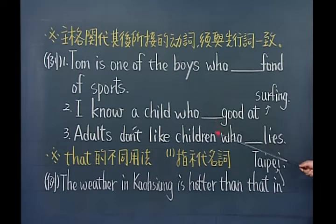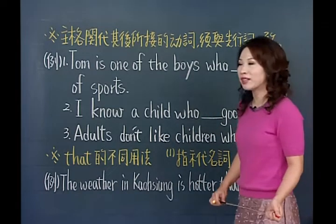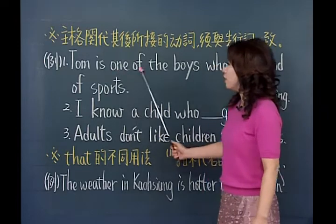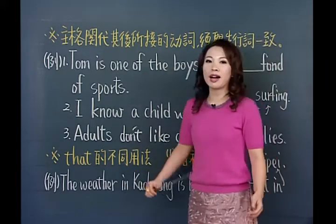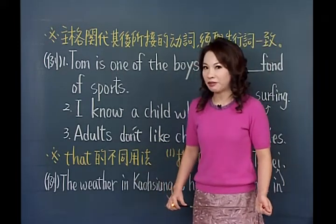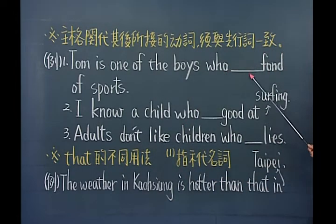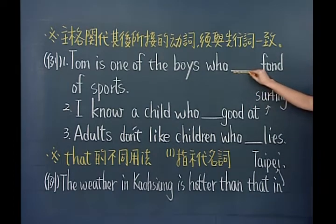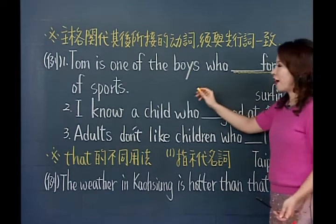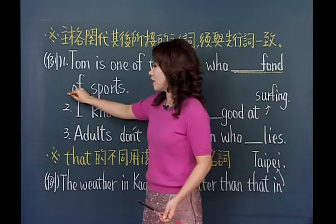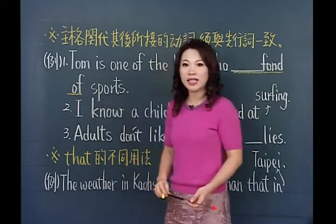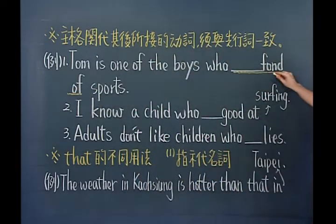各位同学欢迎回来。在关系代名词的第三个小时课文重点当中，接下来要提到的是：主格关带后面所接的动词需与先行词一致，也就是单复数表现要以先行词来决定。这是老师的叮咛，真正要了解概念，我们来看一下例句。